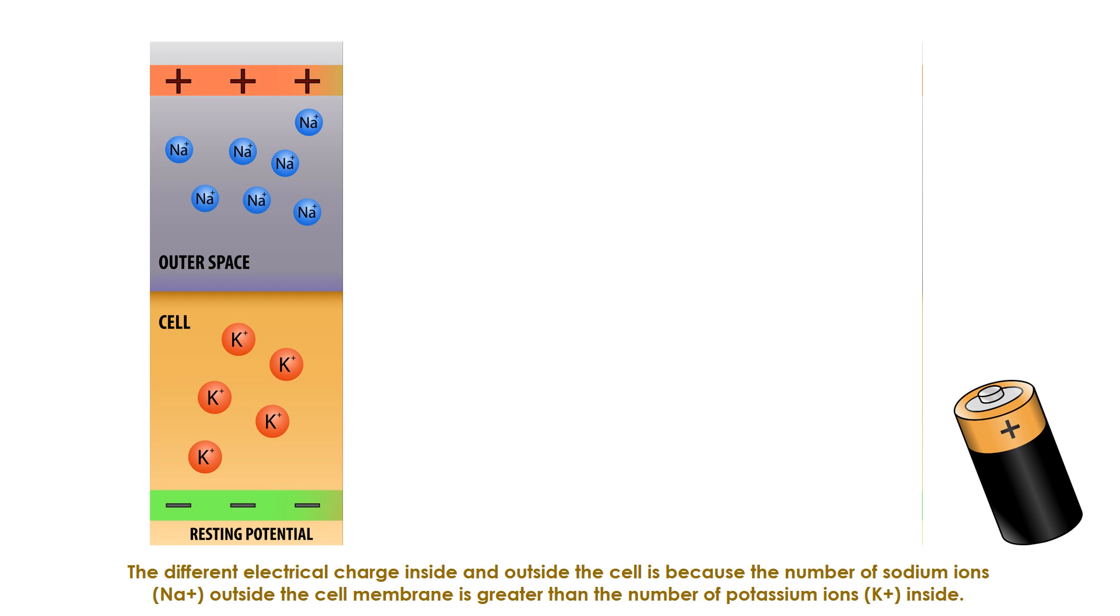The different electrical charge inside and outside the cell is because the number of sodium ions outside the cell membrane is greater than the number of potassium ions inside.